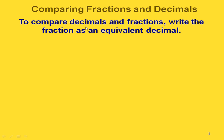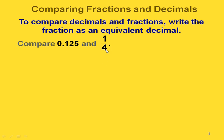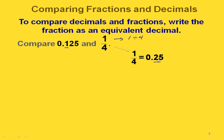Now if we want to compare fractions and decimals, that's hard to do unless we write the fraction as an equivalent decimal. For example, if we wanted to compare 125 thousandths and one-fourth, we would need to write the one-fourth in decimal form. Dividing 1 by 4 gives us 25 hundredths. Now we can compare: the 2 is bigger than the 1 in that first digit, so 25 hundredths is greater than 125 thousandths.